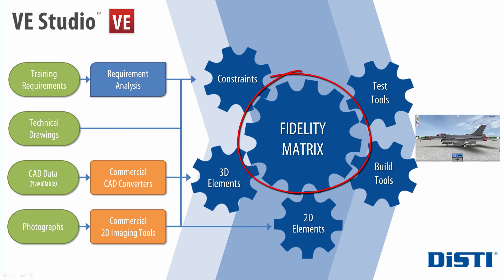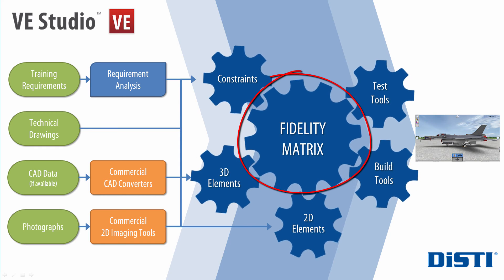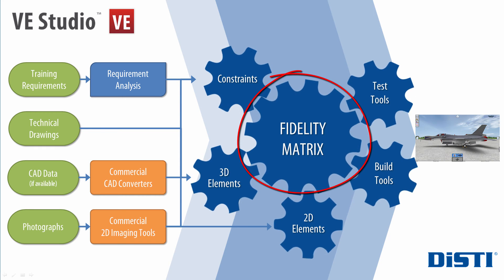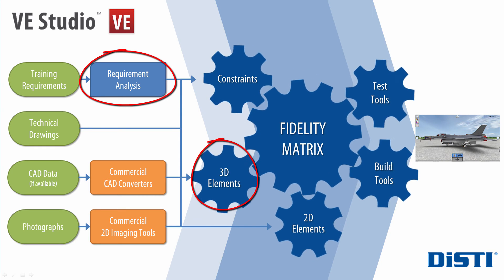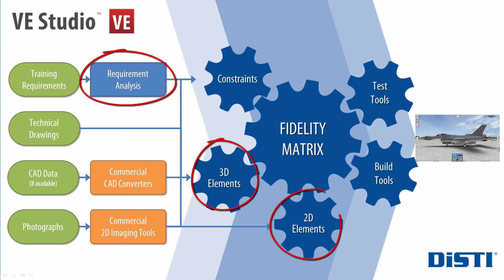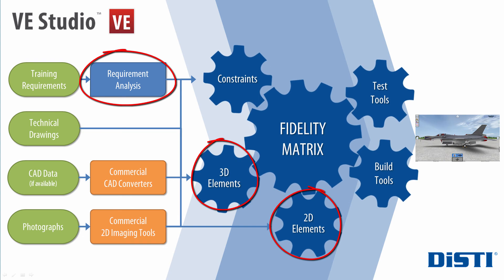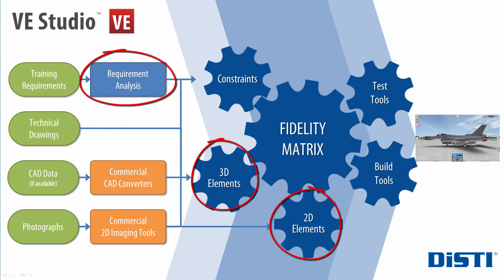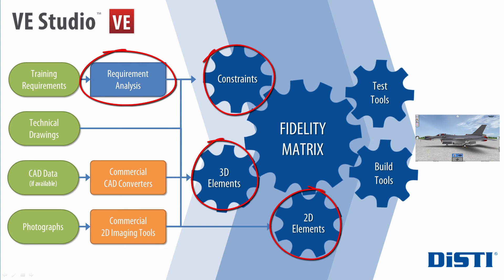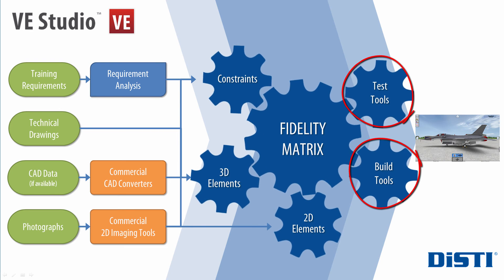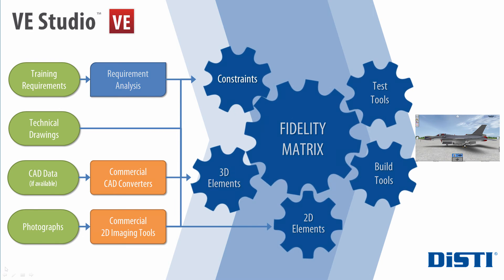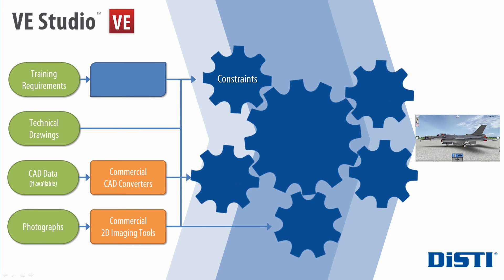or FM for short. The FM is a relational database that correlates the requirements, 3D objects, 2D support equipment, environment properties, and constraints that feed automated build and testing tools. The tools that populate the FM and manage this production pipeline include: